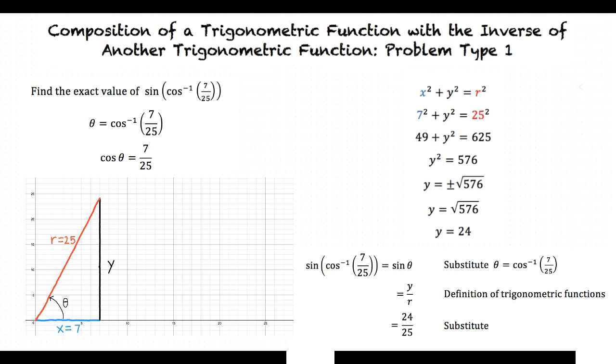In summary, first let theta equal the inverse trigonometric function. This will become the trigonometric function of theta set equal to a fraction. Then find out which quadrant the angle is in using the ASTC rule and the range of the trigonometric function. Using definitions of trigonometric functions, the fraction will be represented by the terms opposite, adjacent, and hypotenuse. Lastly, the Pythagorean theorem is used to solve for the unknown side.